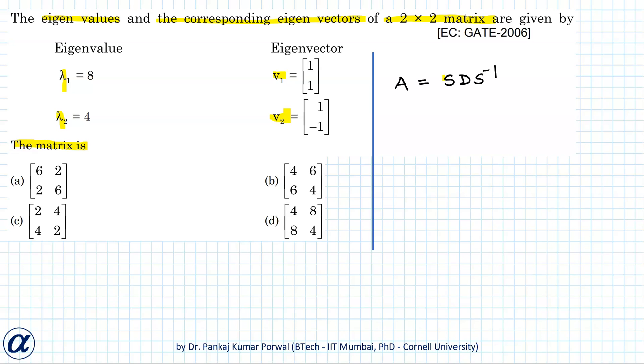Here S is the matrix consisting of eigenvectors as columns and D is the diagonal matrix with eigenvalues as the diagonal entries. And here the position of eigenvectors in S and eigenvalues in D correspond to each other.